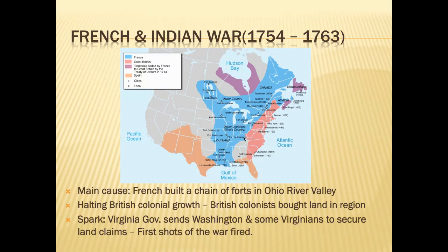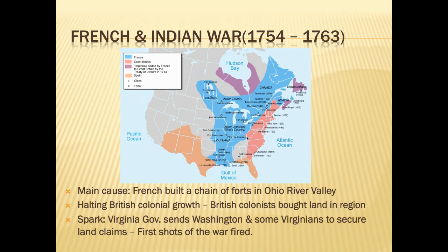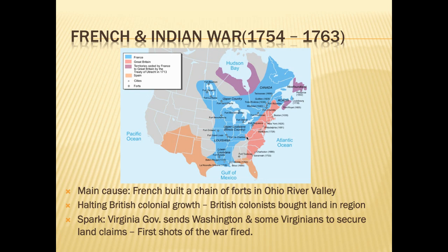Washington and his men ran into a small French brigade, fighting ensued, and the Virginians won. When the French scattered, Washington tried to hold the land and built Fort Necessity out of necessity to protect himself and the Virginians. However, the French returned with a much larger force and forced Washington to surrender. He was allowed to retreat back to Virginia, but the fighting and the war had begun.